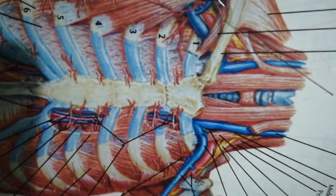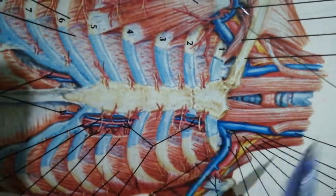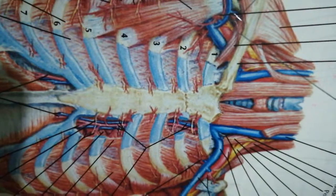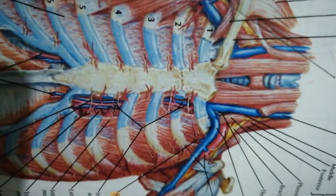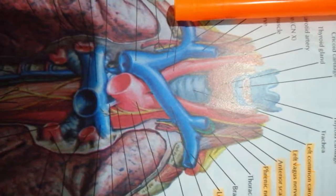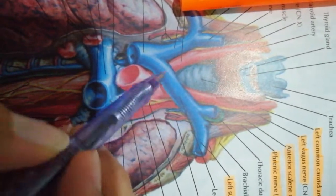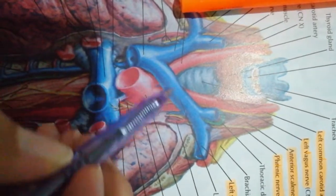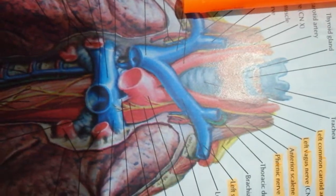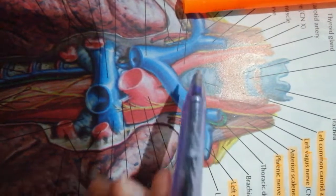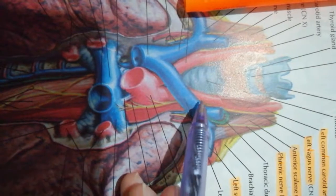That was the viscera. Now let's talk about the major vessels. We have the left and right brachiocephalic veins, the right brachiocephalic artery, the left common carotid, and left subclavian. These are the major vessels.